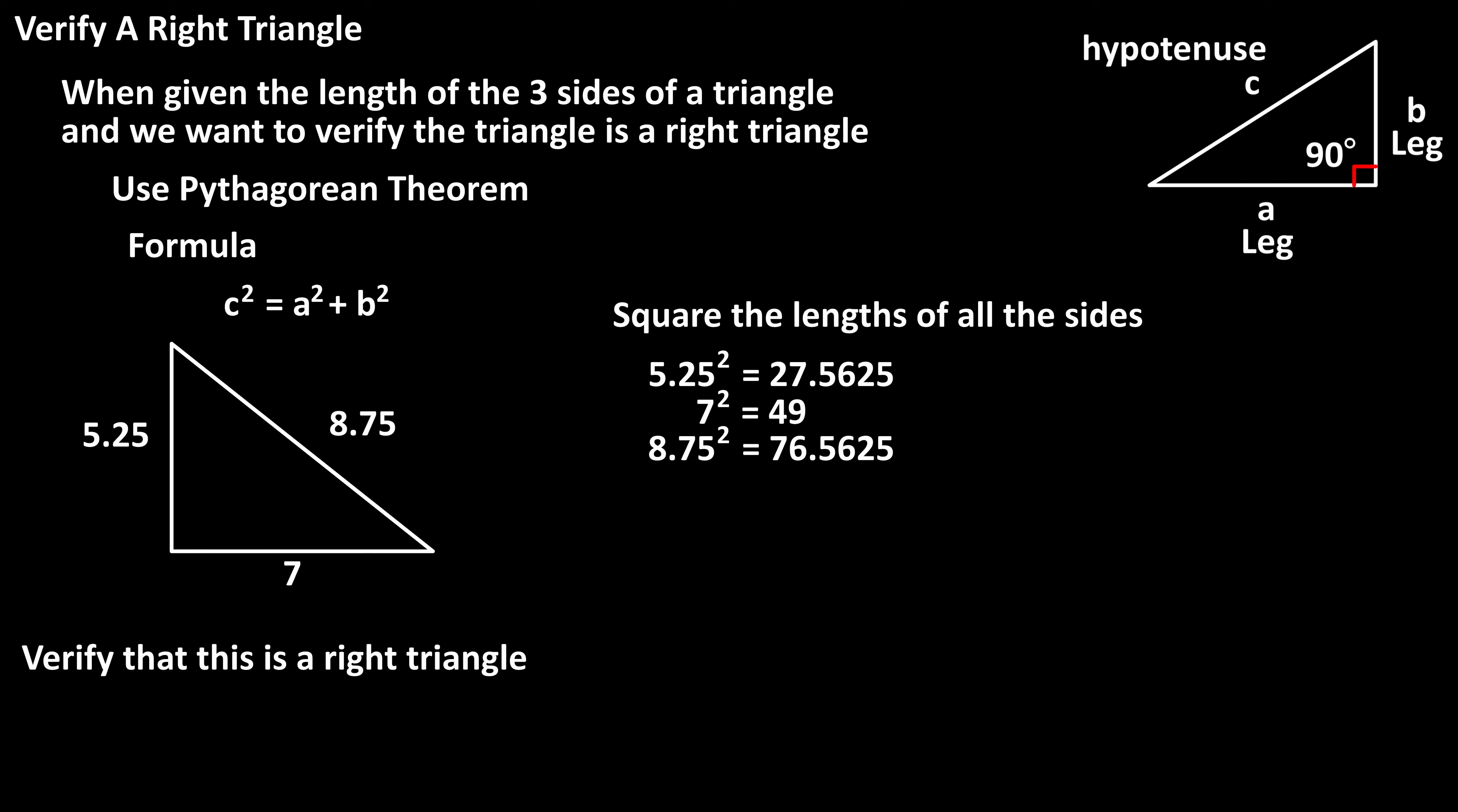So we ask ourselves, do adding the two smaller numbers together equal the larger number? So we add the two smaller numbers together, 27.5625 plus 49, and we get 76.5625, which equals our third variable.